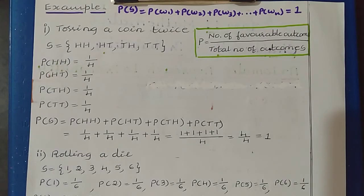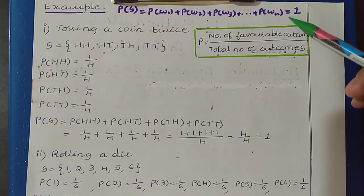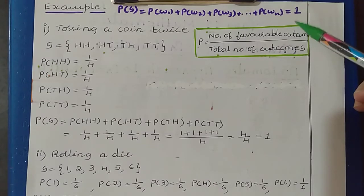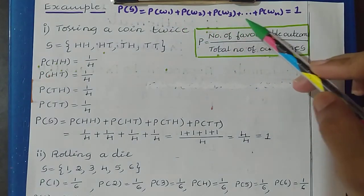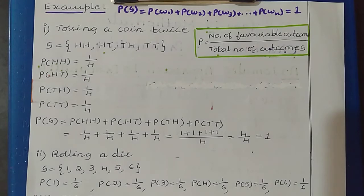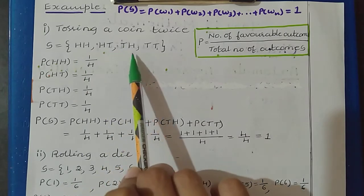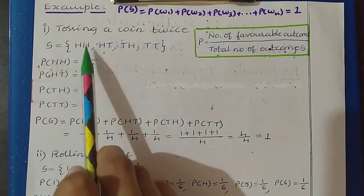Next, let us see the second example to understand the second rule. The second rule says the probability of the sample space is equal to 1, and that we can get by adding the probability value of the outcomes. Here I have taken an experiment of tossing a coin twice. For this experiment we can have 4 outcomes. So the sample space of the experiment is {HH, HT, TH, TT}. Now let us find the probability of each outcome.